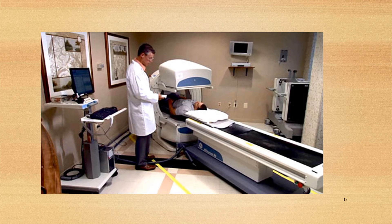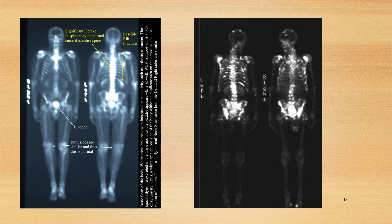A bone scan is a nuclear imaging procedure in which tiny amounts of radioactive materials, or tracers, are injected into a vein and taken up in varying amounts at different sites in the body. Areas where cells and tissues are repairing themselves most actively take up the largest amounts of tracer. A bone scan can detect and assess the spread of cancer in the bones, as shown in the highlighted areas.